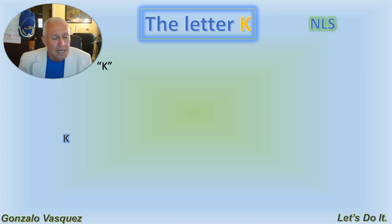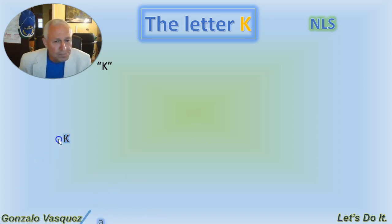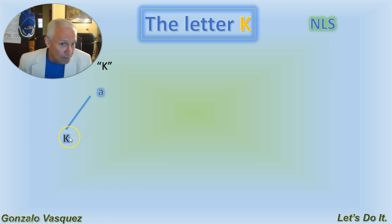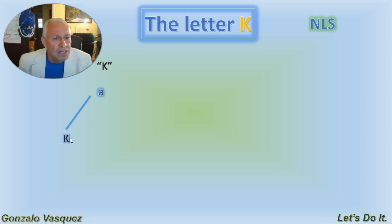Once again, the name of the letter is K. With the A, the name of the letter is K, and the sound is K — with the A, K.